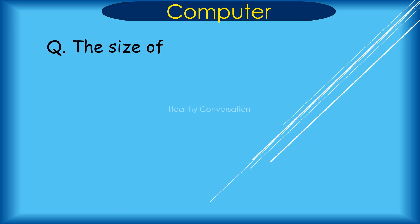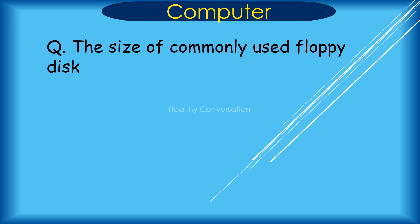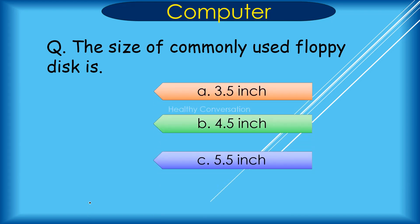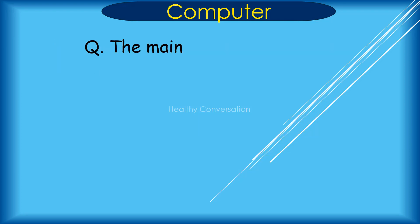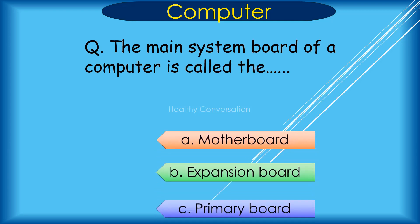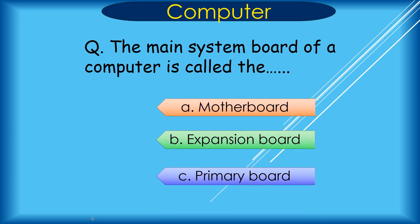Question: The size of a commonly used floppy disk is A. 3.5 inch, B. 4.5 inch, C. 5.5 inch. Correct answer is A. 3.5 inch.